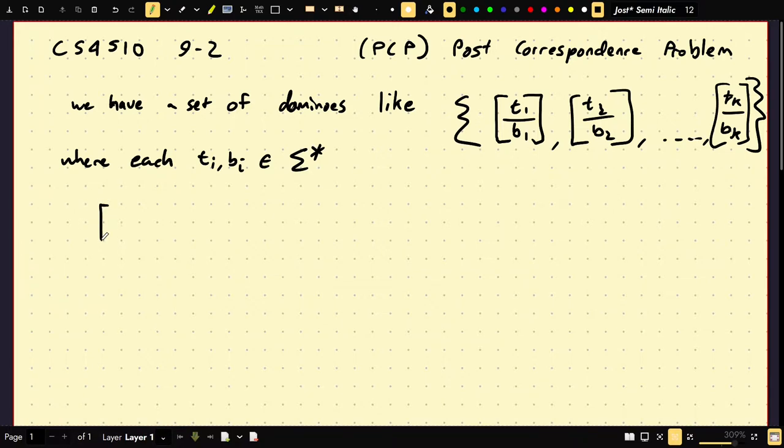So the idea is, we want to find a pattern of dominoes such that the top and bottom match. For example, if we had the dominoes like A, A, B, and then the domino B, A, A. So these two dominoes, in this sequence, would give us the strings on the top A, B, A over A, B, A. And then those two strings are equal.